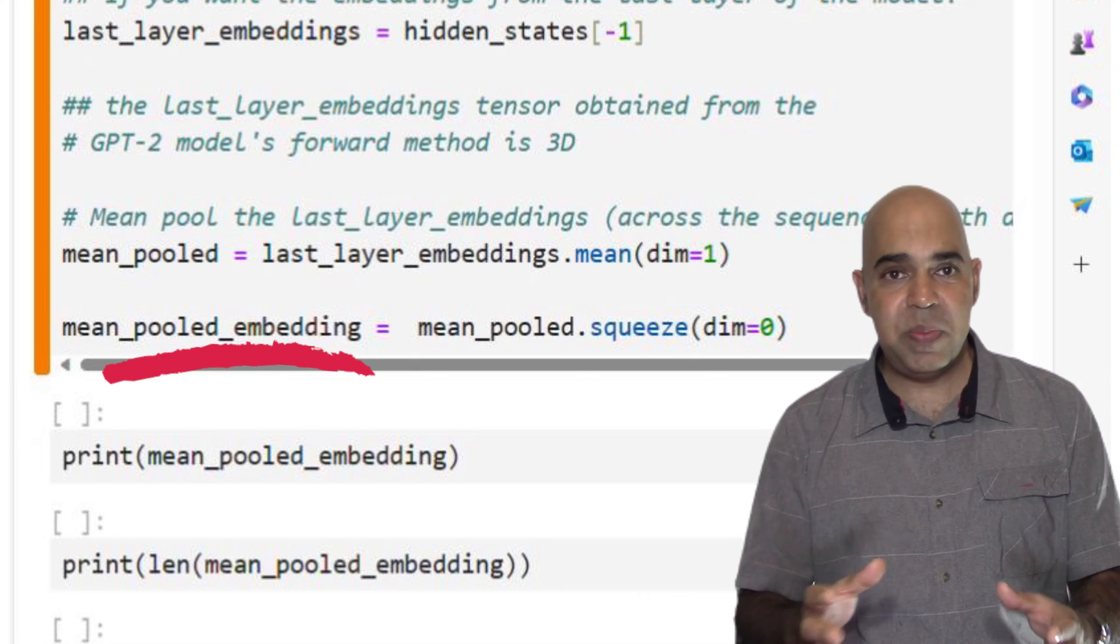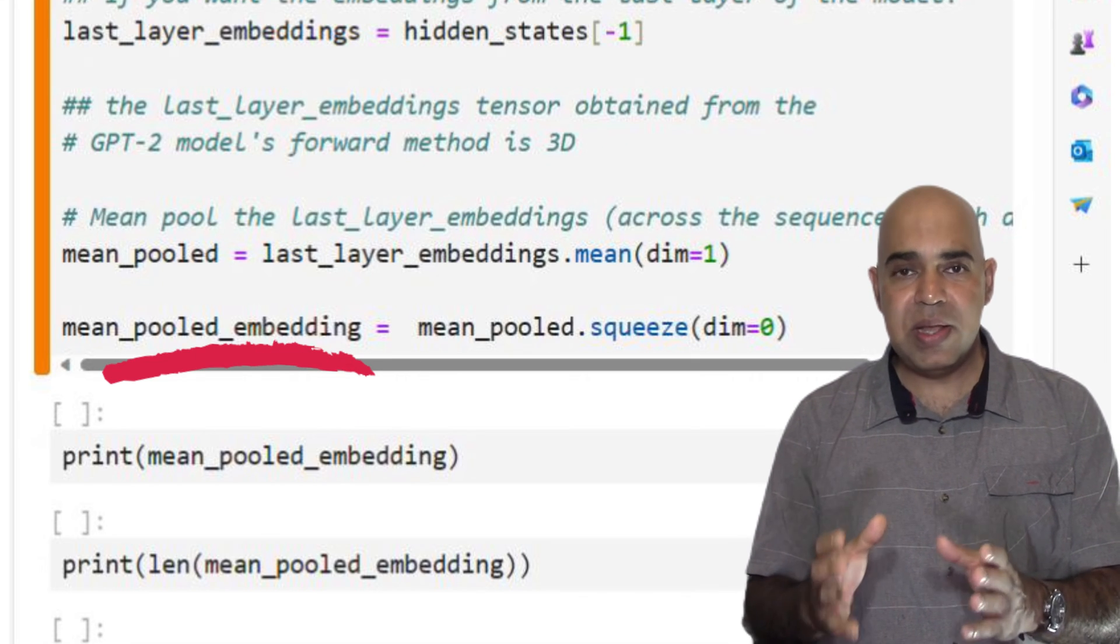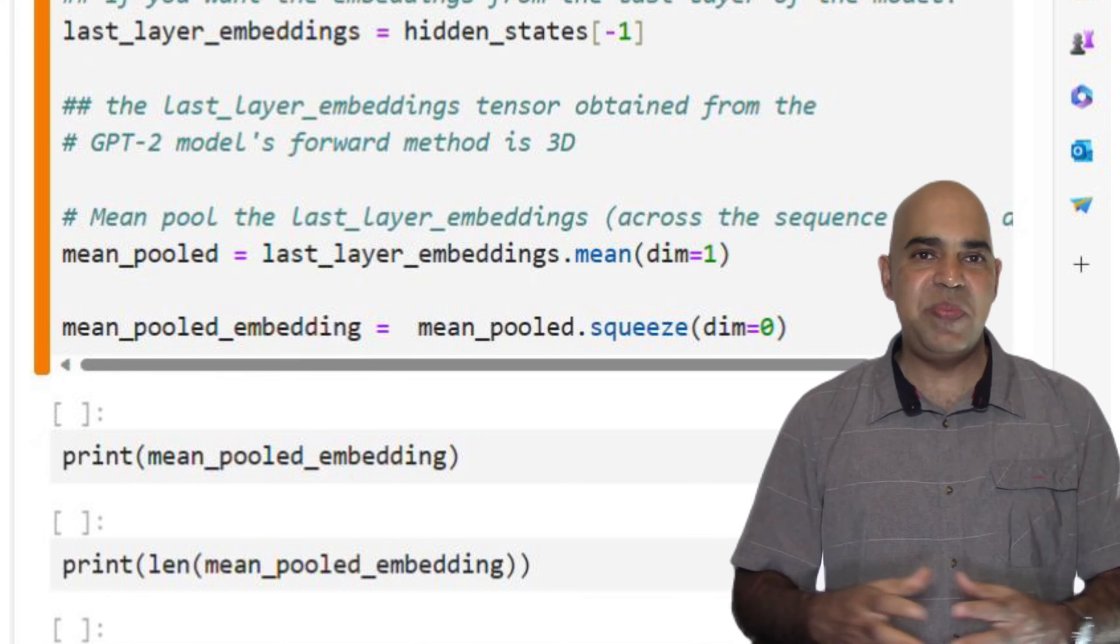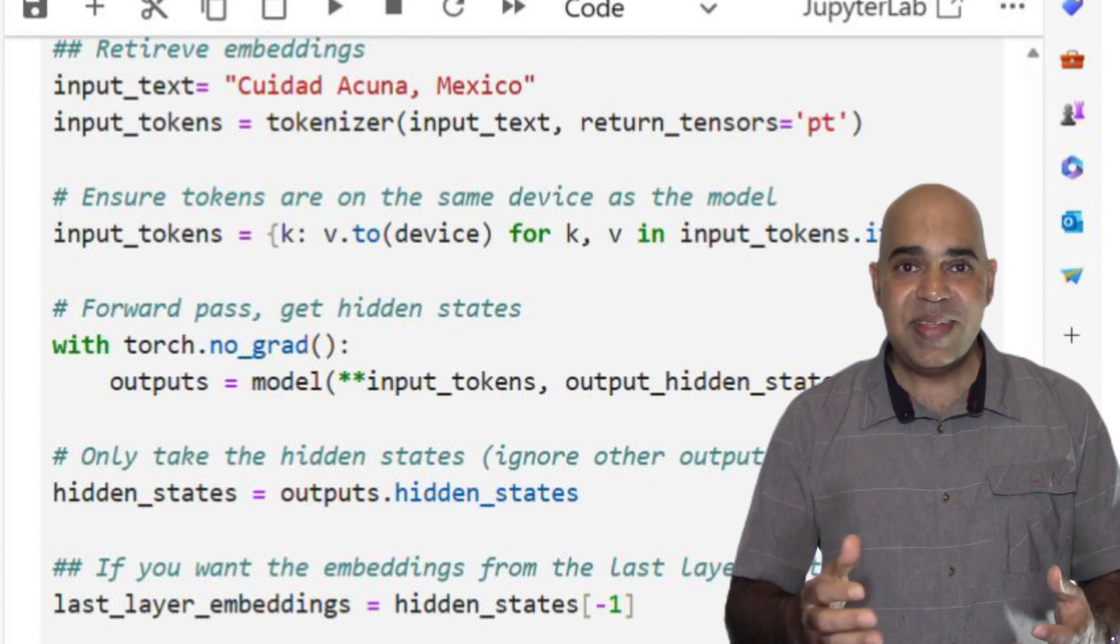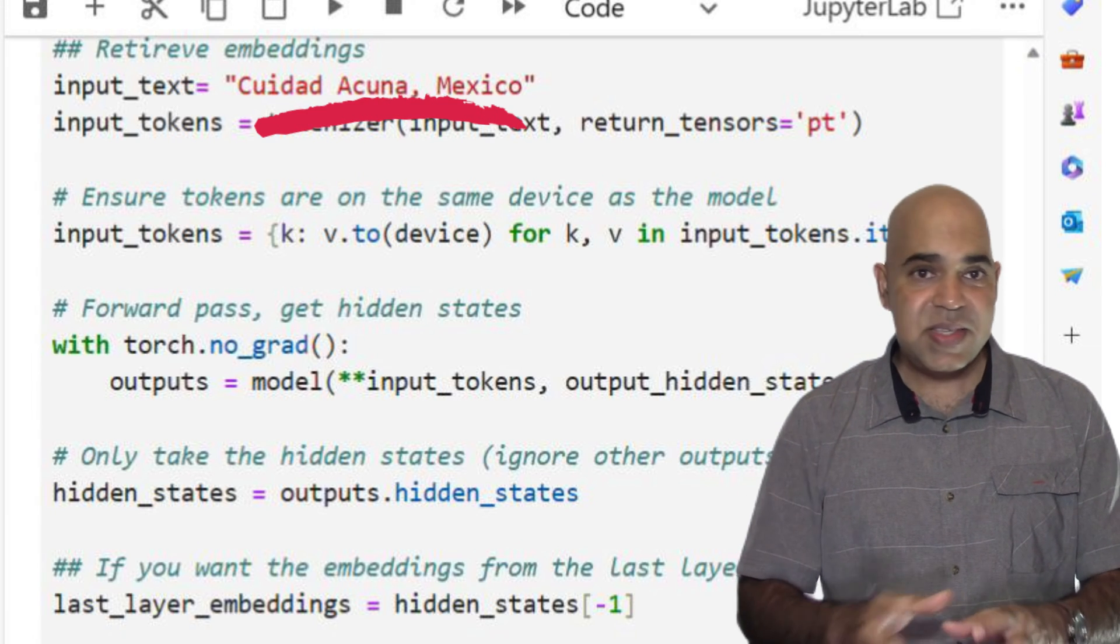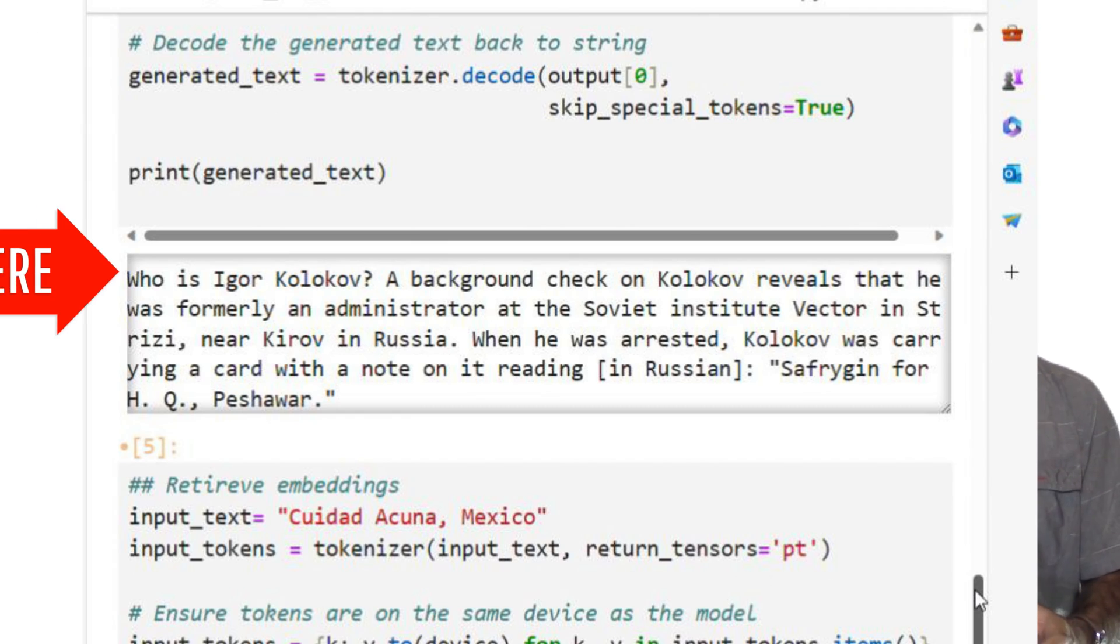So this variable mean_pooled_embedding holds the embedding for the input text we provided. Note that the embedding is for the input text you provided. This is not the embedding of the response text.